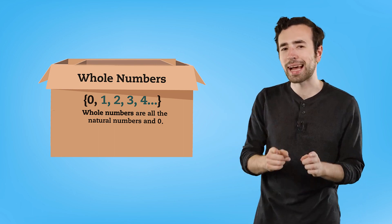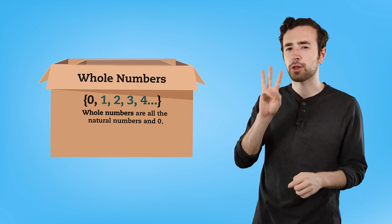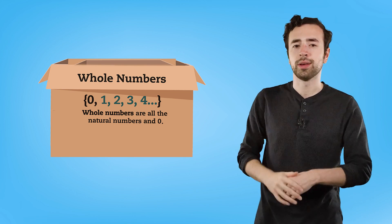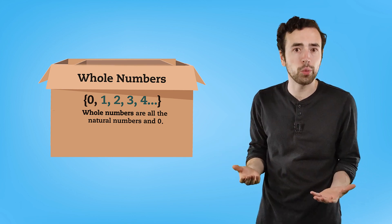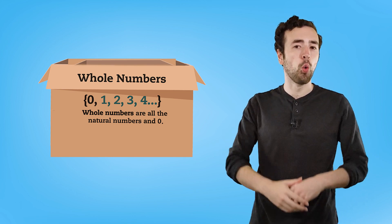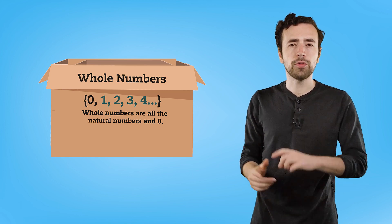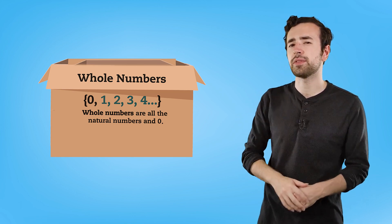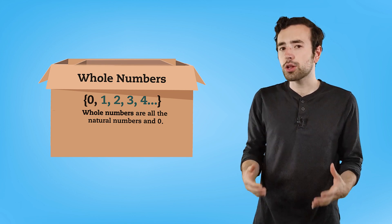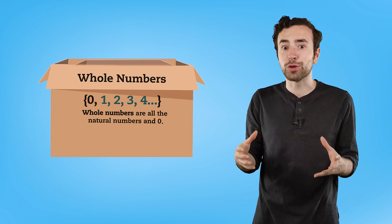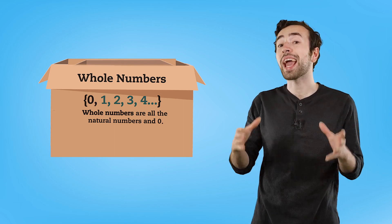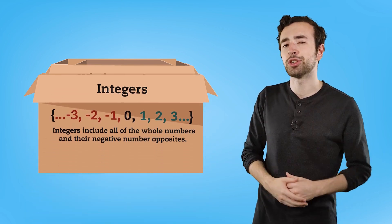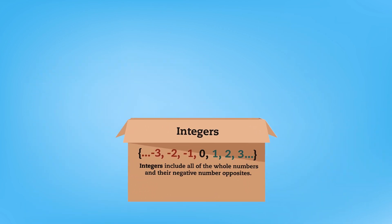Whole numbers include all of the natural numbers as well as the number zero. We've got natural numbers like three, two, and one, then we included zero, which got us the group called whole numbers. What if we keep going backward and look at some negative numbers? When we include negatives, we get a big group of numbers you will work with a lot — the integers. Integers include all of the whole numbers and their negative number opposites.